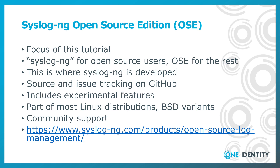This is where most of syslog-ng development is done. The source code and the issue tracking system are available on GitHub. It includes quite a few experimental features contributed by users from around the world. Syslog-ng is part of most Linux distributions and BSD variants, and compiles on most other Unix and Unix-like platforms with minimal modifications. Syslog-ng open source edition is supported by the community. You can learn more about syslog-ng OSE on the syslog-ng website or on GitHub.